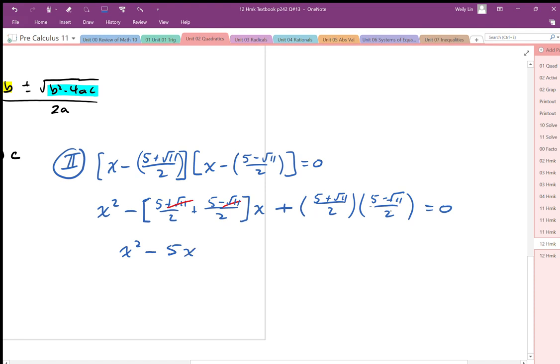And then we're going to expand this out. So we get plus, we'll just multiply the fraction, the denominators first. And then in the numerator, we're going to have a difference of squares. So we get 25 minus root 11 squared is 11, all over 4. And that's equal to 0.